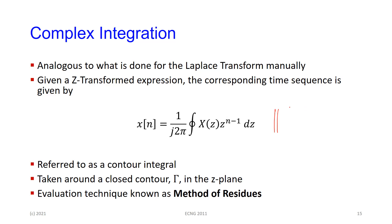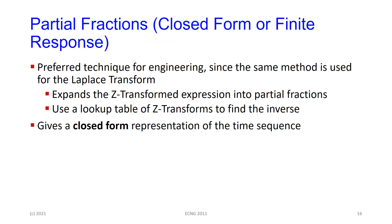Somebody did the hard work for us, so we have the results in table form. Our approach instead is to use the Laplace transform approach — get the thing into a form where we can look it up in the table. That means taking the transfer function and breaking it up into smaller bits. The smaller bits are what we look up in the table — and those smaller bits are what we call partial fractions.